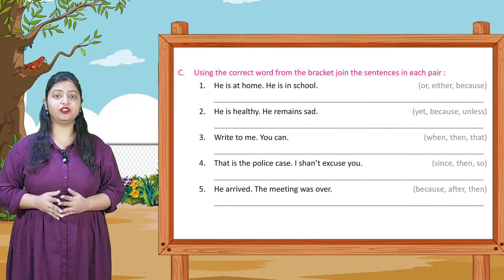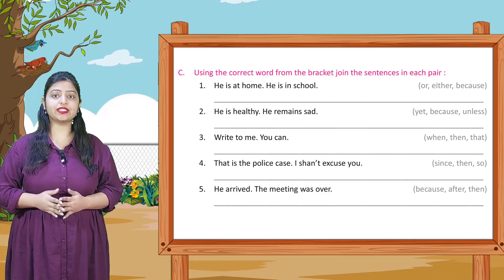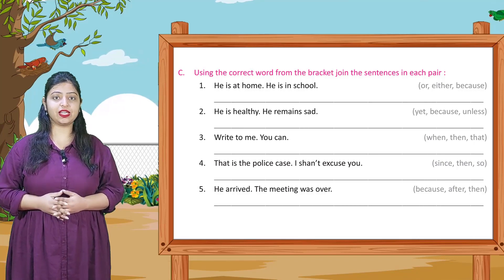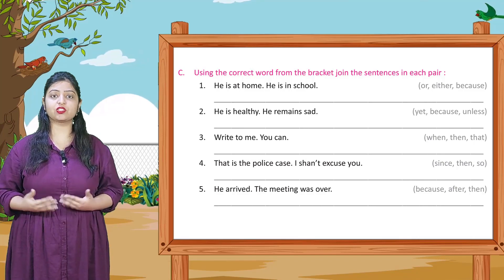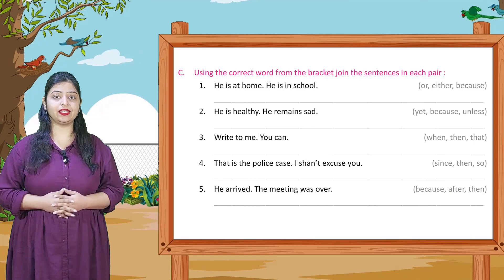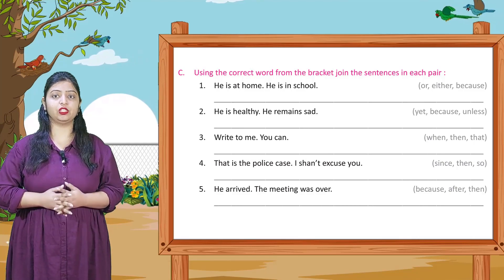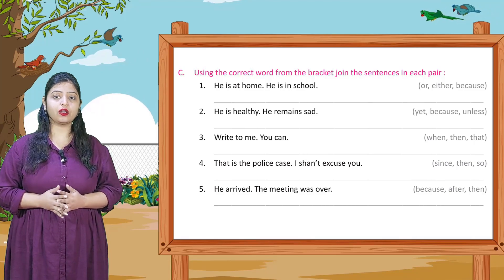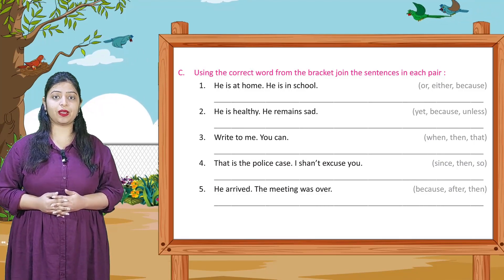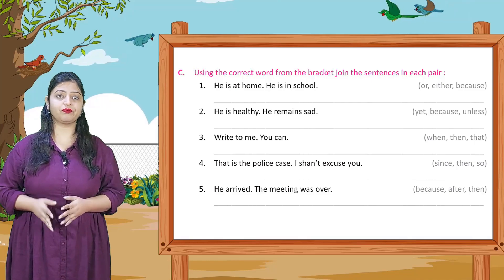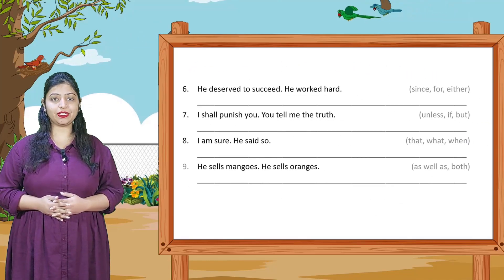Using the correct word from the brackets, join the sentences in each pair. Here you are given some words in brackets. Using them you have to join two sentences. First: He is at home, he is in school. You are given options: or, either, because. So here you will write He is at home or he is in school. In this manner you will complete the remaining sentences.